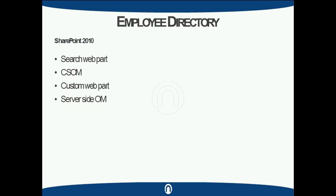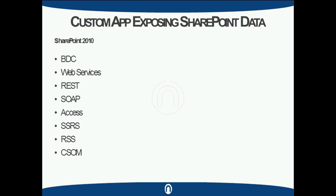Creating a custom web part calling into the server-side object model is probably one of the most frequent ways that things were done in 2007 and 2010. We could also have custom applications that expose SharePoint data — whether it's a Java app or a .NET app, something that lives completely outside of SharePoint and needs to pull in SharePoint information, whether that's documents, contact information, or line-of-business data. In 2013, a lot of these options have been expanded and the capabilities are now a lot more easy to use.